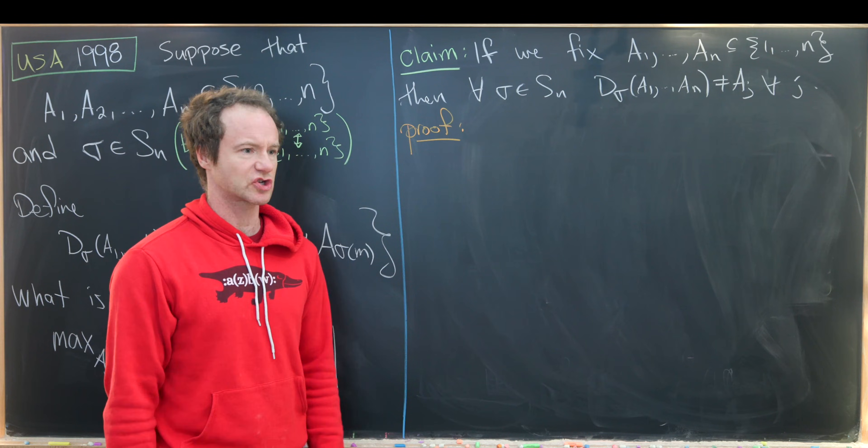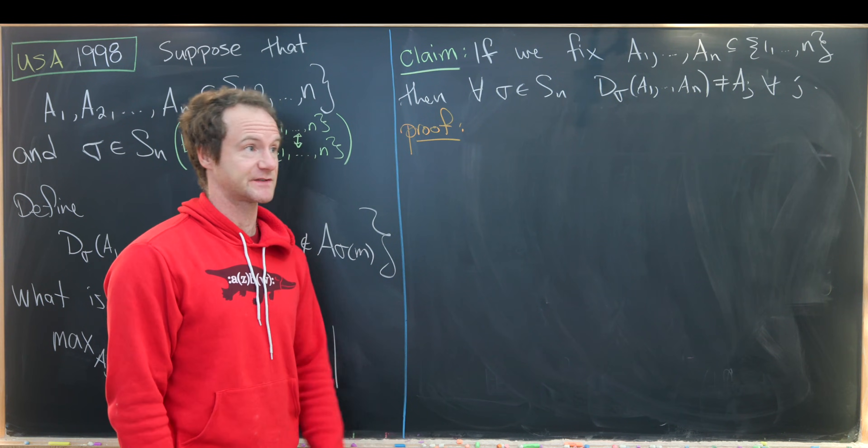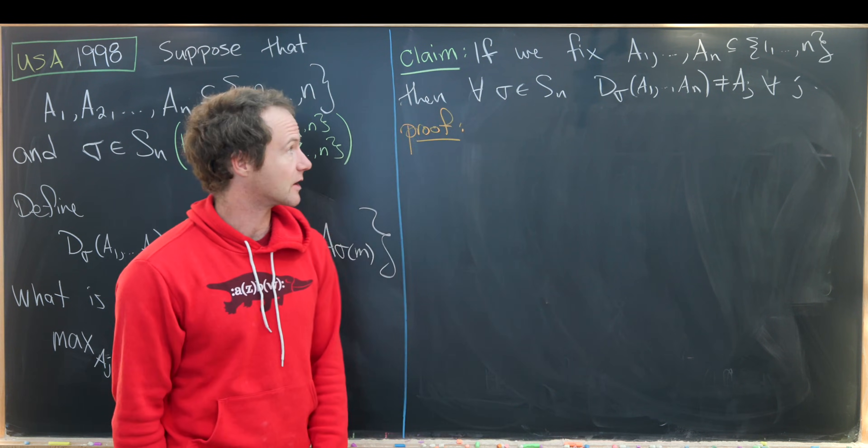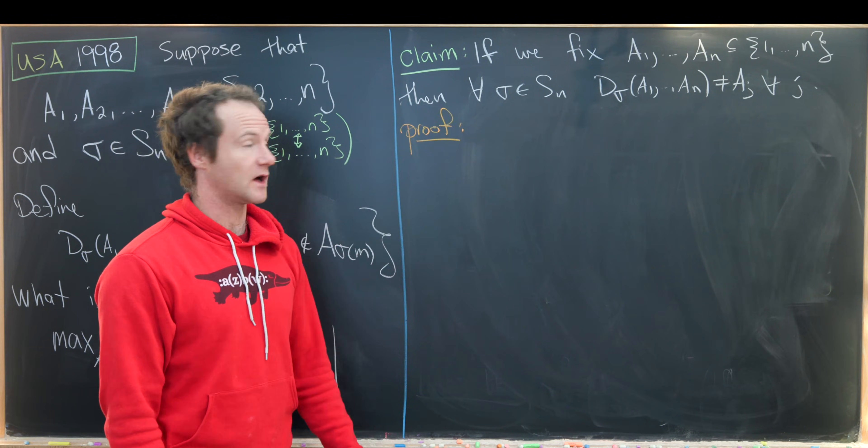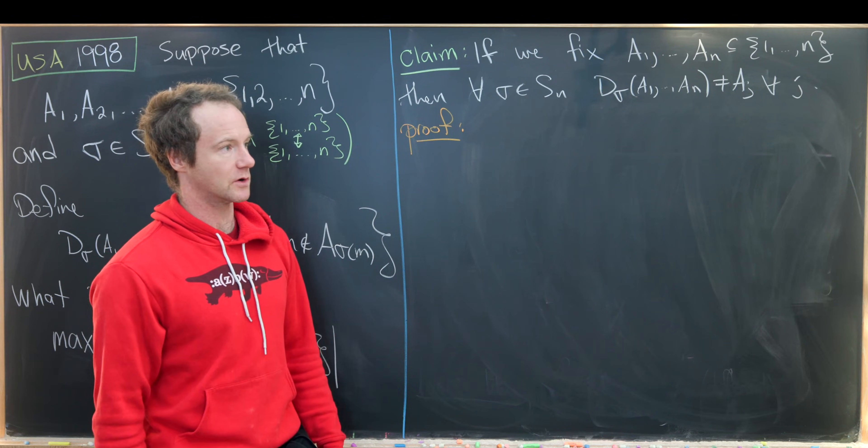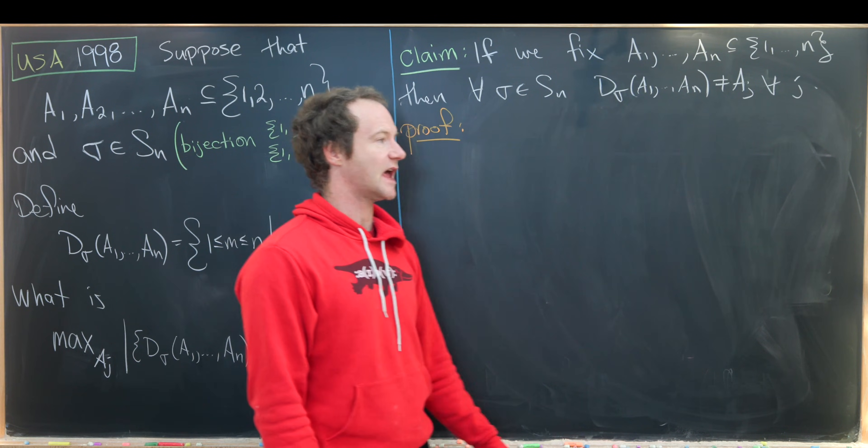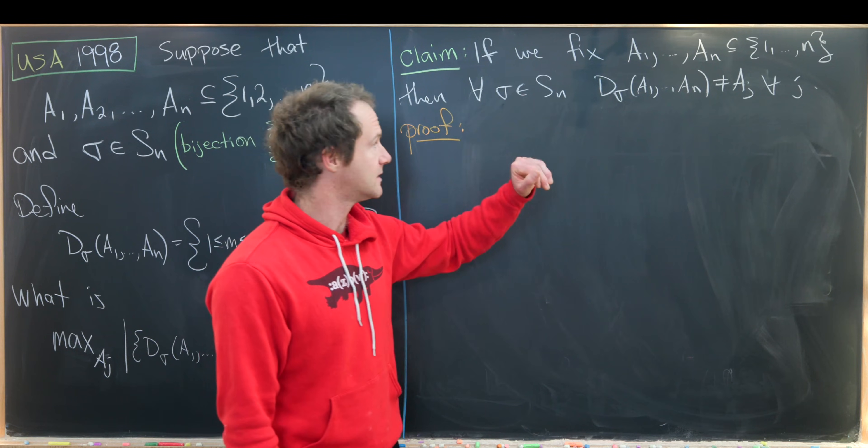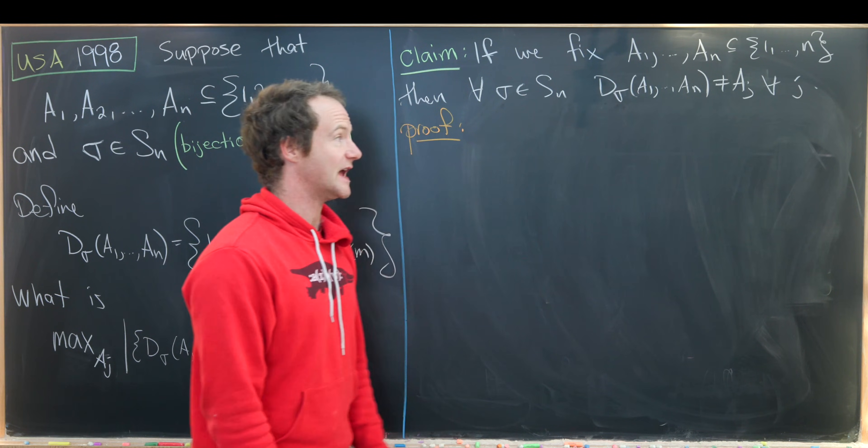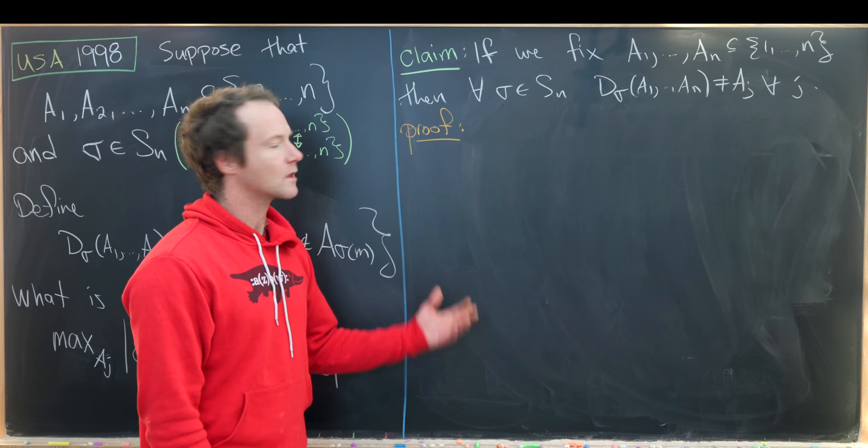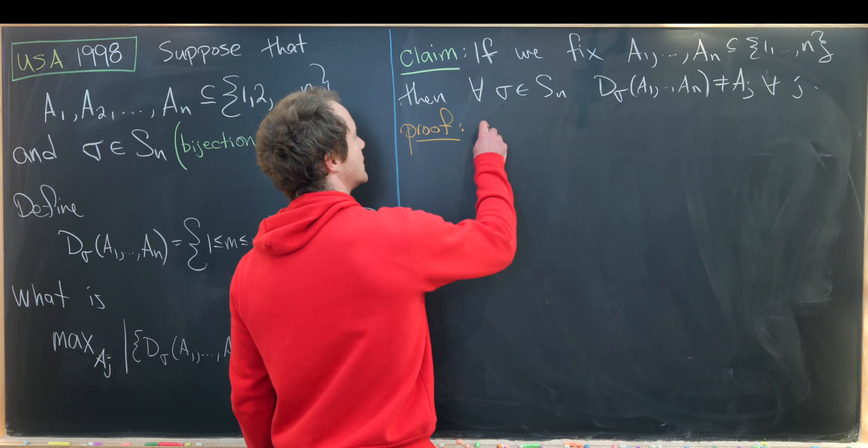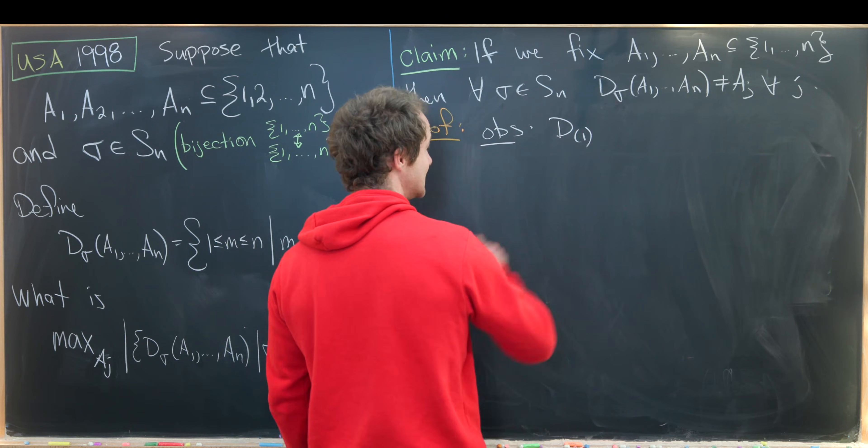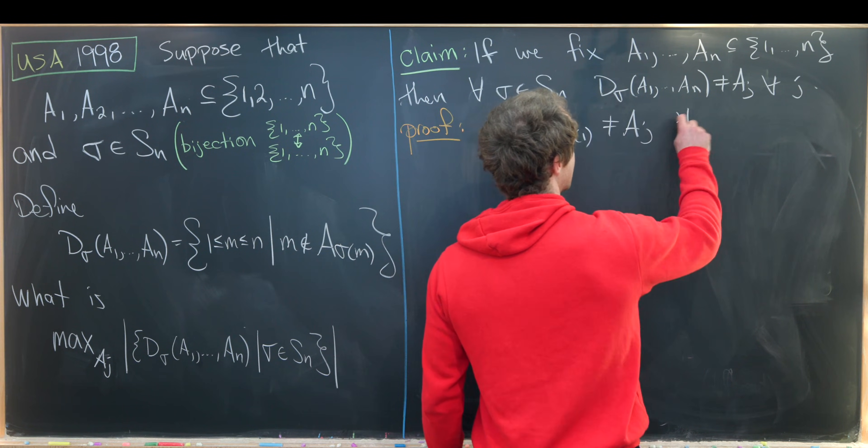Now that we've done enough exploration to see the structure of this setup and get a guess for the total number of sets of this form which will allow us to form this maximum later, let's start our final solution with the following claim which we saw hinted at on the last board. So let's say we fix subsets A1 through An, then we want to show that for all bijections σ in Sn, D_σ is not equal to Aj for all j. So how can we do that? Well first we want to make the following observation within this proof and that is D of the identity bijection is not equal to Aj for all j.